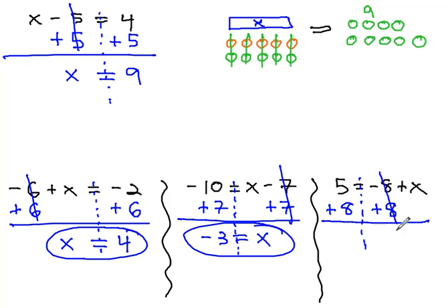The negative 8 and positive 8 are gone, and the x is finally alone, like we want. 5 plus 8 is 13, and we have our solution.